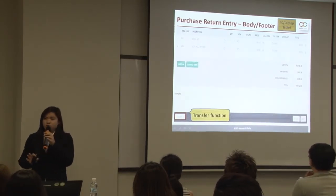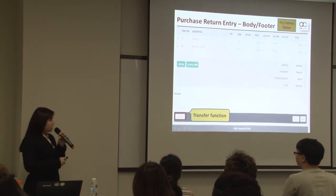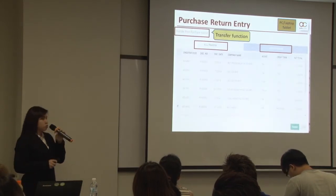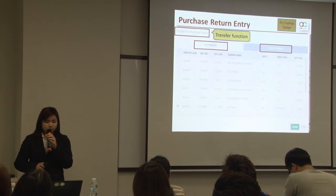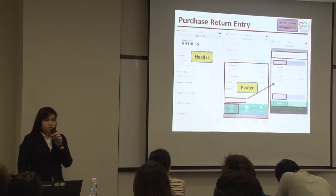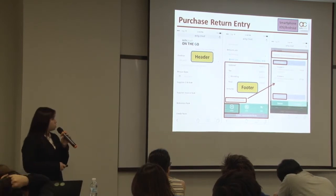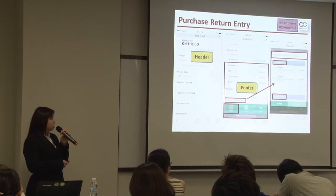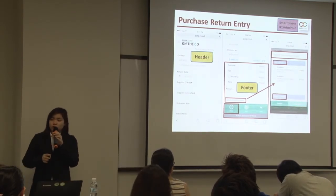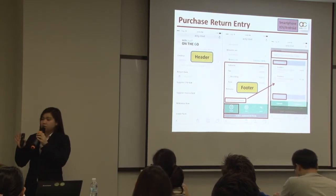The transfer function is also available in AOTG for both sales and purchases transactions. For example, in the Purchase Return Entry, the transfer function is located at the bottom left corner. You may choose whether you want to perform a full transfer or partial transfer. On smartphone, you can access the transfer function from the more options button at the bottom. This transfer function is available in both sales and purchases transactions.